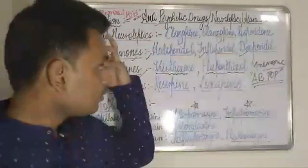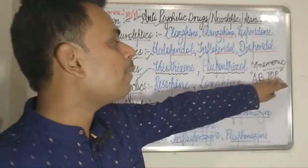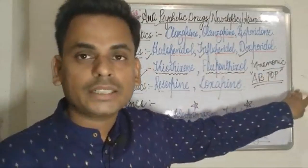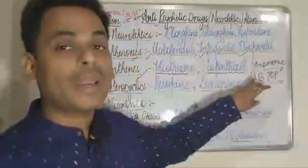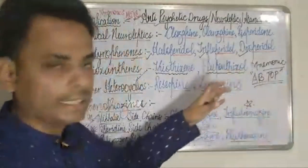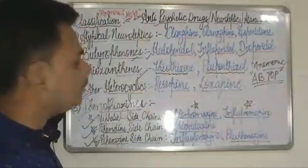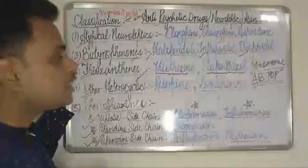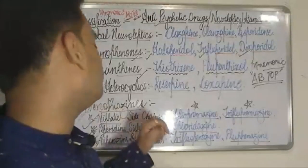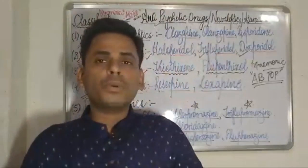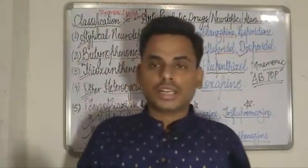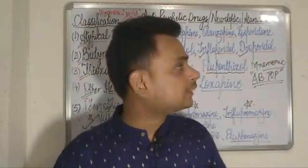This was the discussion about the mnemonic for antipsychotic drug classification. By remembering ABTOP — where A refers to atypical neuroleptics, B refers to butyrophenones, T refers to thioxanthines, O refers to other heterocyclics, and P refers to phenothiazines — we can very easily remember the entire classification.